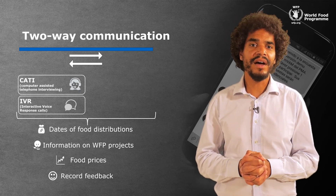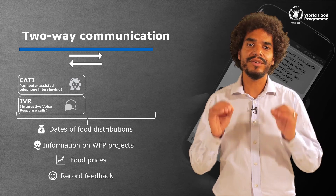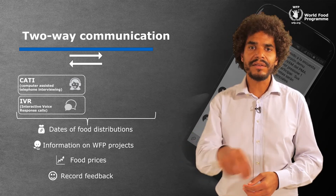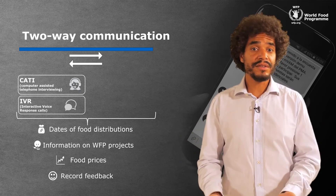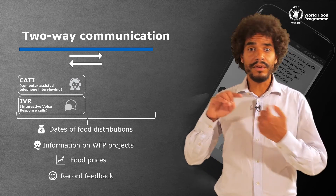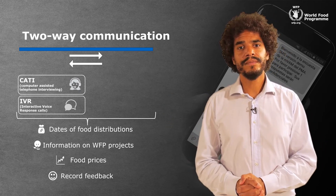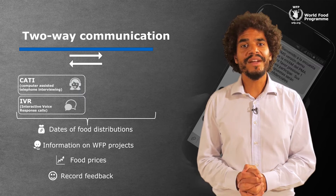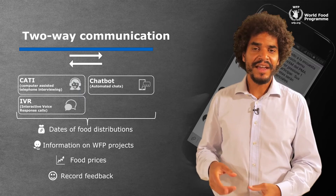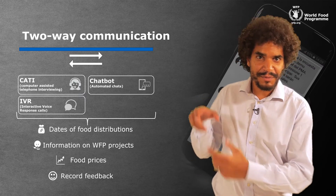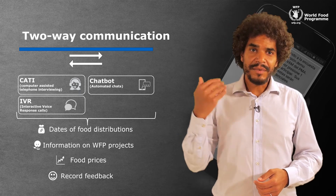The advantage of an IVR — interactive voice response system — is that it's there 24-7. And when our operators come back to the office, they can listen to messages that have been recorded, refer the question to the right person, or call beneficiaries back if needed. Right now, we're also working on a chat application, a chatbot. A chatbot is a robot that lives on a smartphone, gives you questions. That's coming soon.